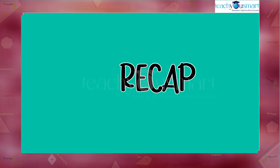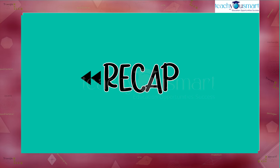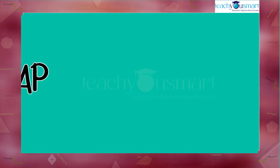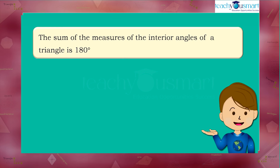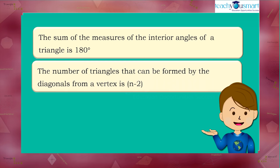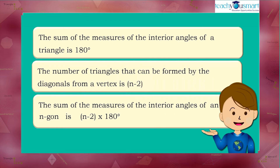Let's do a quick recap of today's session. We learned: the sum of measures of the interior angles of a triangle is 180 degrees; the number of triangles that can be formed by the diagonals from a vertex is n minus 2; and the sum of measures of interior angles of an n-gon is n minus 2 multiplied by 180 degrees.